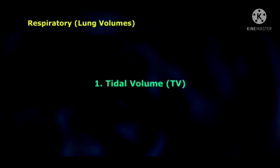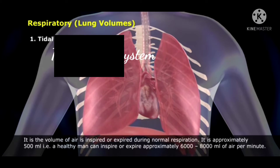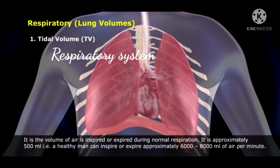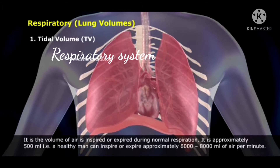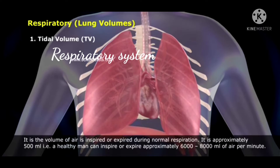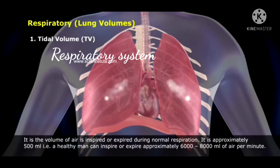The first lung volume is tidal volume, TV. It is the volume of air inspired or expired during normal respiration. It is approximately 500 ml. A healthy man can inspire or expire approximately 6,000 to 8,000 ml of air per minute.